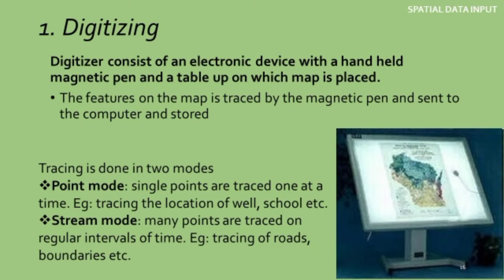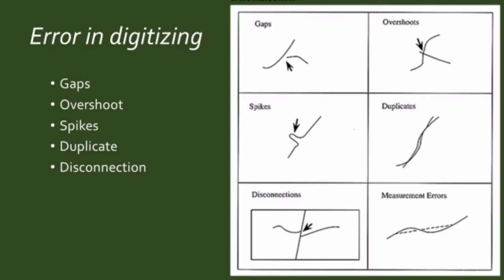Point mode is more suitable for attribute data input rather than spatial data input; in spatial data input you rely more on stream mode. Errors in digitizing include gaps, overshoot, spikes, duplicates and disconnections, which can be understood with the accompanying image.